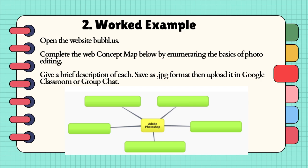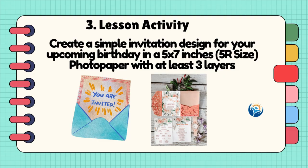Worked example: Open the website Bubbl.us and complete the web concept map below by enumerating the basics of photo editing. Give a brief description of each, then save as .jpg format and upload it in Google Classroom or group chat. Lesson activity: Create a simple invitation design for your upcoming birthday in a 5 by 7 inches (5R size) photo paper with at least three layers.